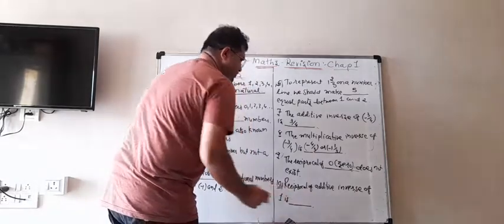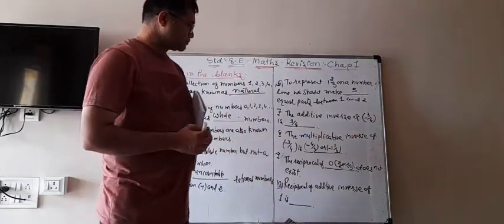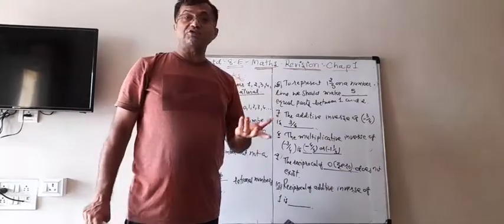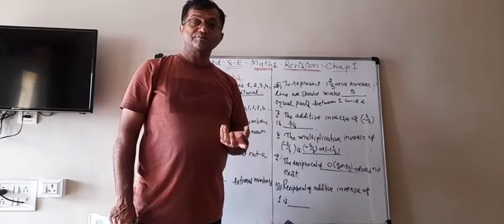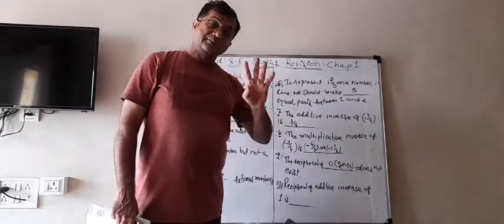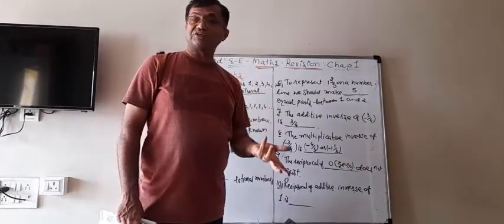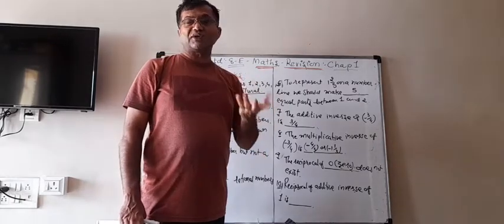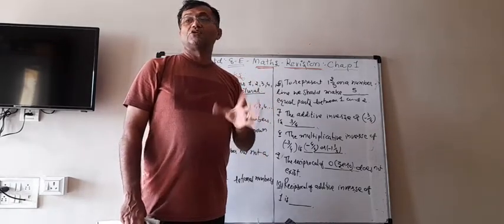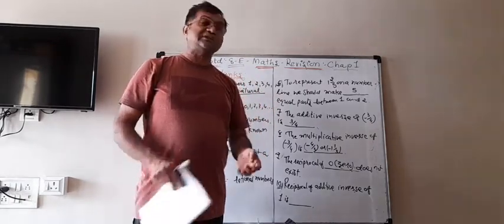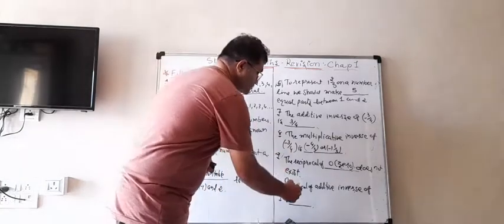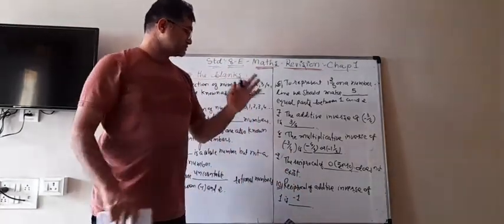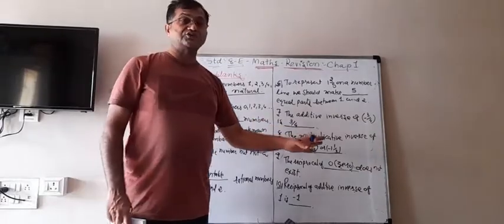Number 10. The reciprocal of the additive inverse of 1 is blank. First we find the additive inverse of 1, which is minus 1. The reciprocal of minus 1 is minus 1 itself, because 1 and minus 1 are numbers whose reciprocals are the same numbers. So the answer is minus 1.